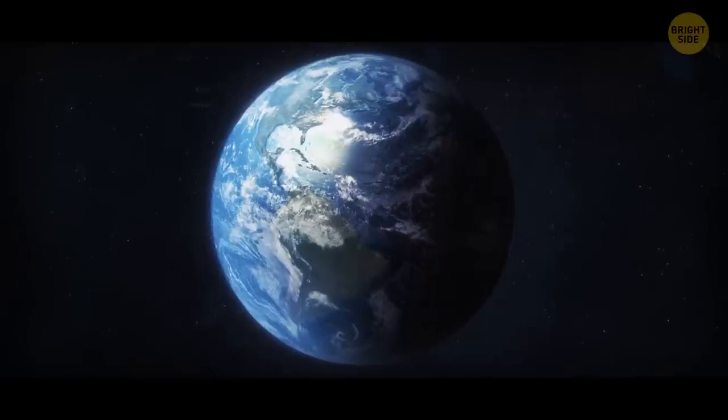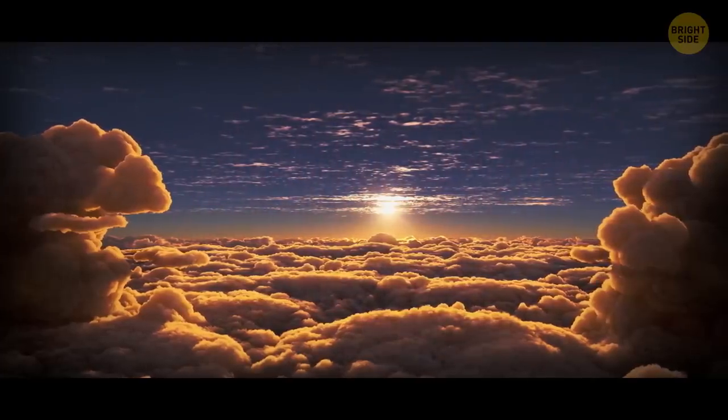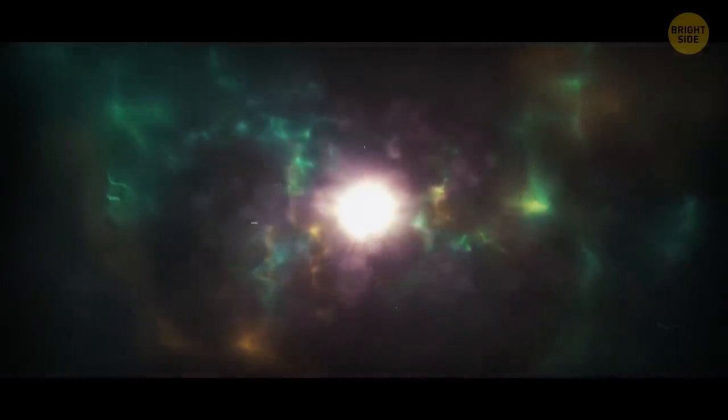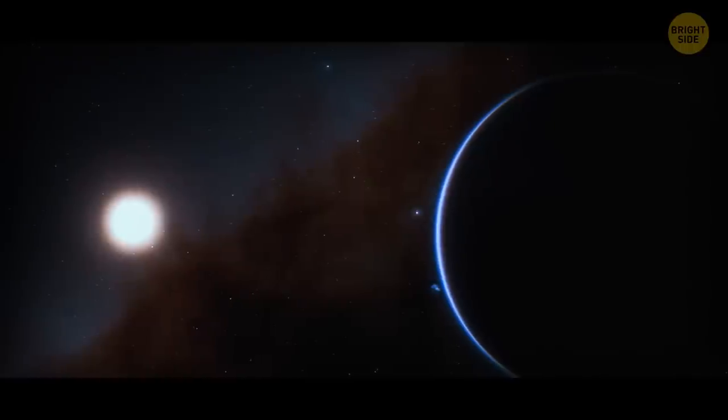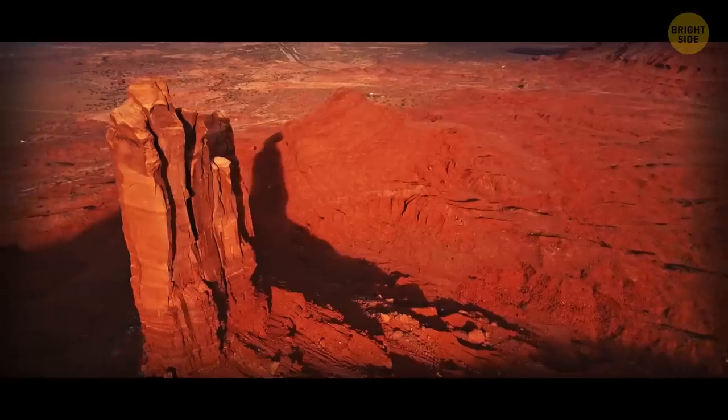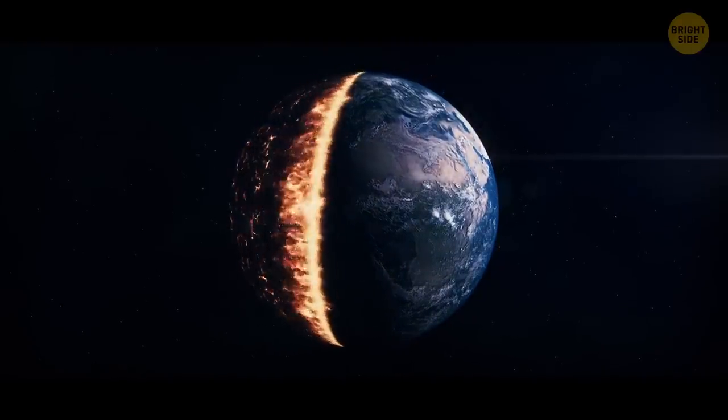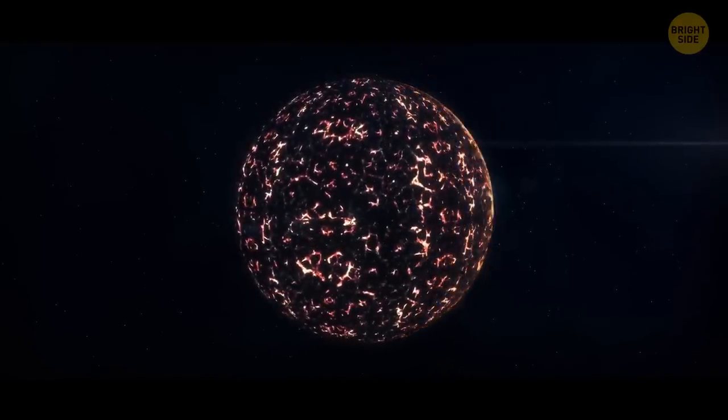It doesn't mean we're safe here on Earth. Even our middle-aged sun knows how to produce super flares. But while young stars can have them once a week or even more often, for the sun, it's once in a few thousand years. And still, if people don't figure out how to protect the planet, just one super flare can shred our ozone layer and wipe out life on Earth.